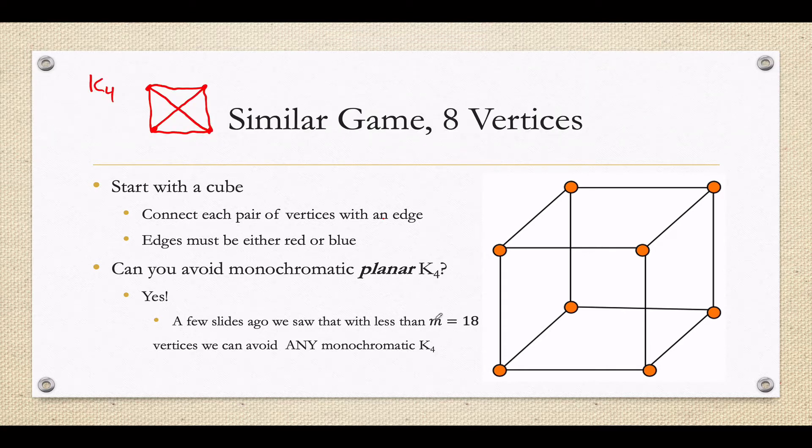I said that if you had 17 vertices, a complete two-colored graph on 17 vertices, you could avoid a K4. That was a few slides ago. So if you can avoid any K4 with 17 vertices, you can certainly avoid any K4 when you only have eight vertices.